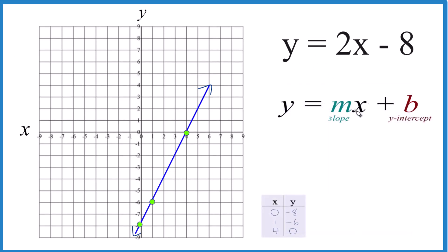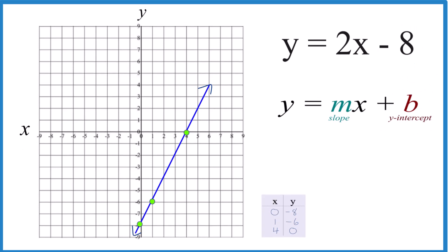So y equals mx plus b. b is the y-intercept, and that's negative 8. So we're just going to go over to the y-axis and find the y-intercept. That's negative 8. And it's actually on the one we had before, and that happens sometimes.